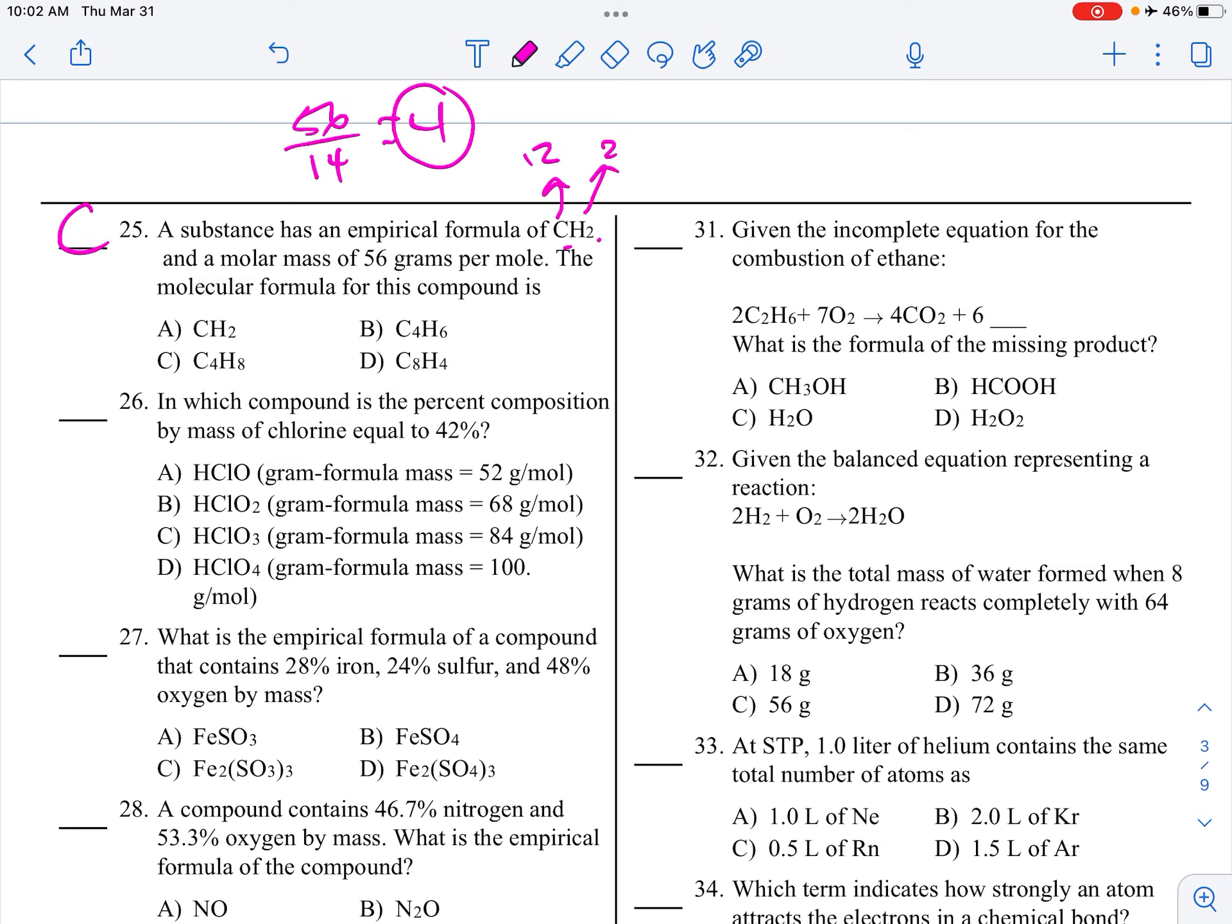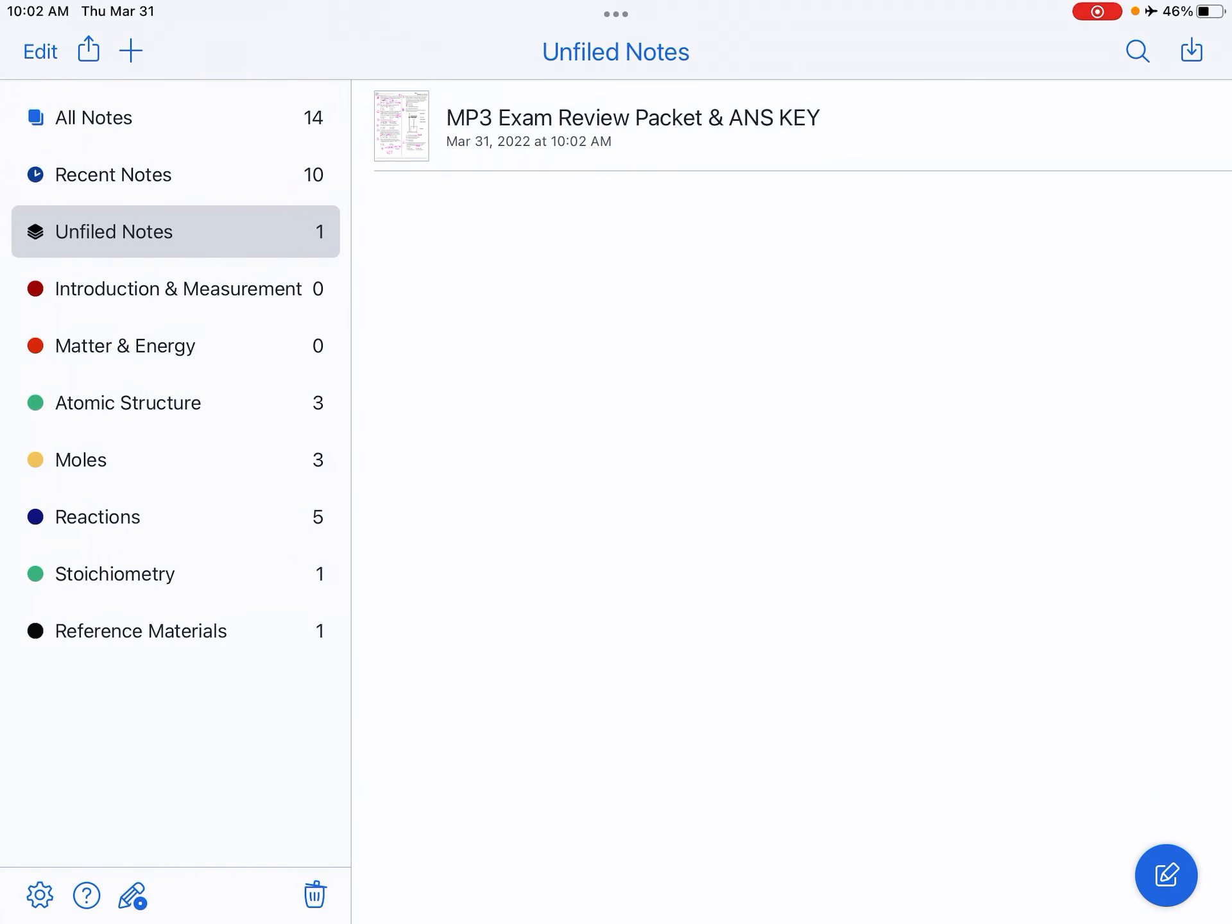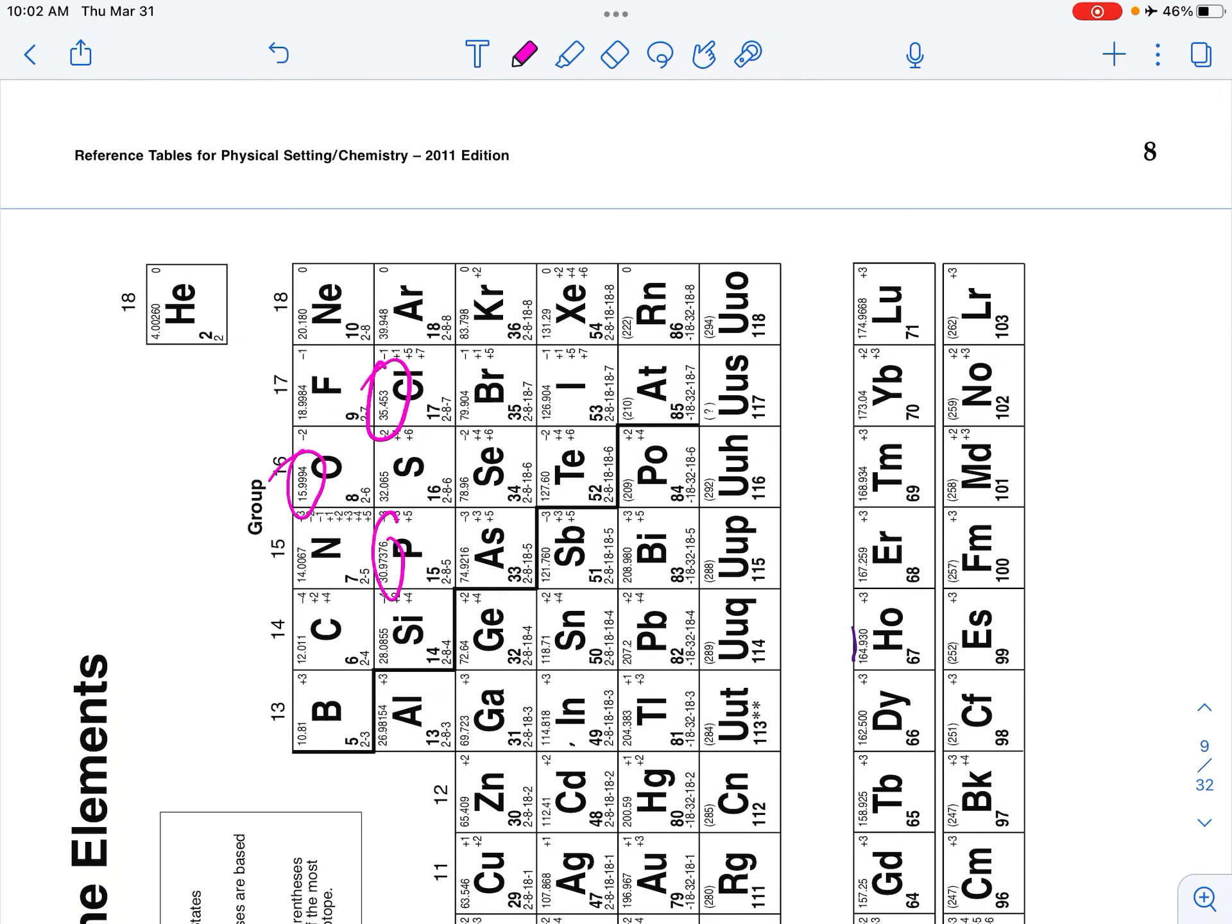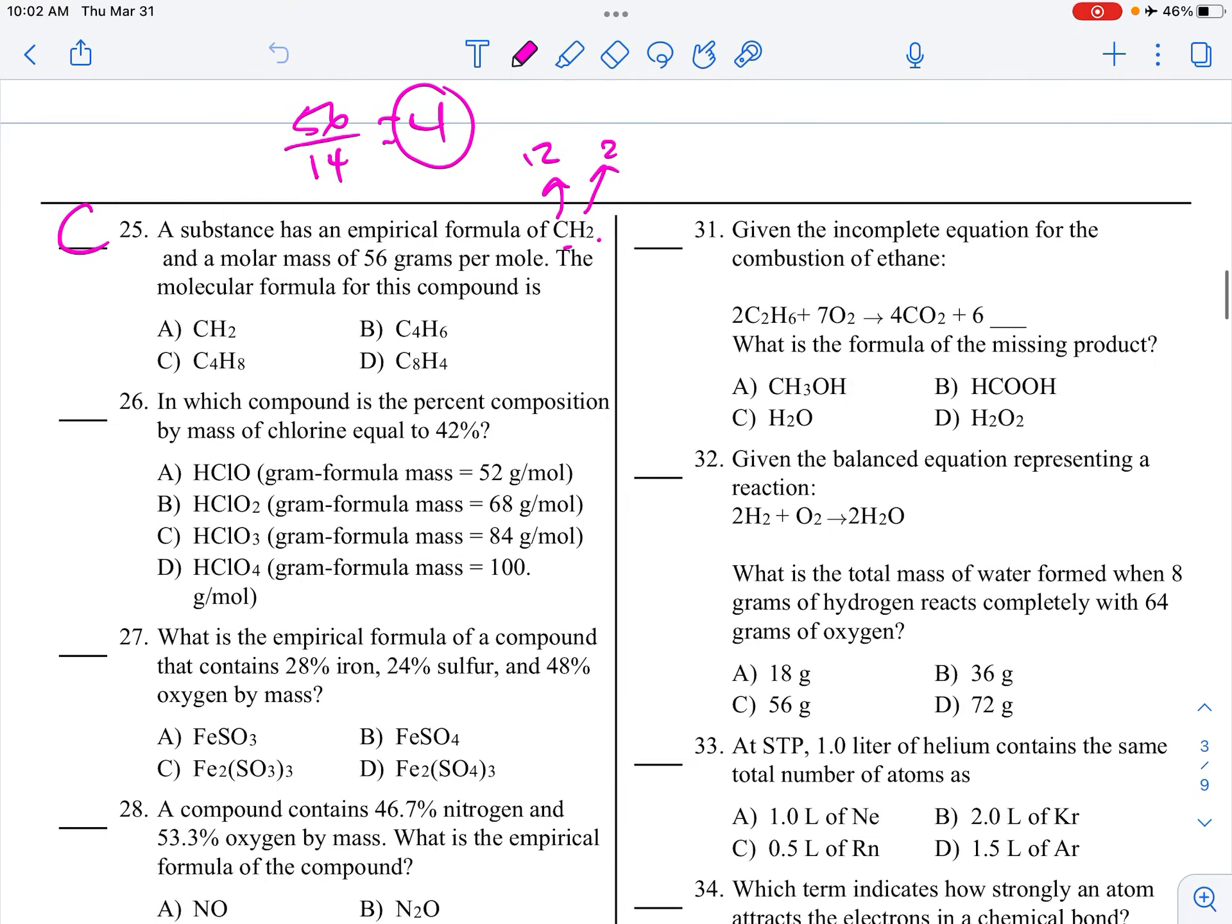Which compound is the percent composition by mass of chlorine equal to 42%? So, I know the total. So, now I just need to look for the mass of chlorine itself. If you look that up, it says, I think, 35. Yep, 35. So, 35 is our mass of part. They give us our different masses of holes, and then we're going to times 100. So, 35 divided by 52 times 100 gives me 67% for the first one. 35 divided by 68 times 100 is 51%. Nope. 35 divided by 84 times 100 is 41.6%, which is 42, which means that's our answer.